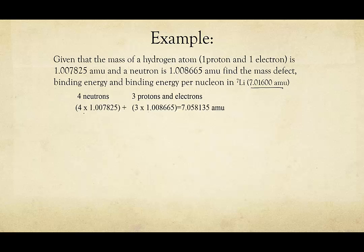We know that there are four neutrons and three protons and electrons, and so we can fill in the fact that we have four neutrons, fill the mass in, three protons and electrons, and we fill that mass in to get the mass of all the component parts. We then subtract that from the actual mass to get our mass defect.